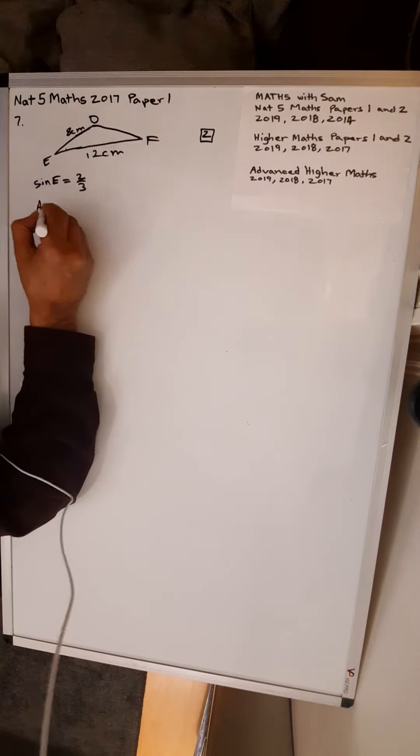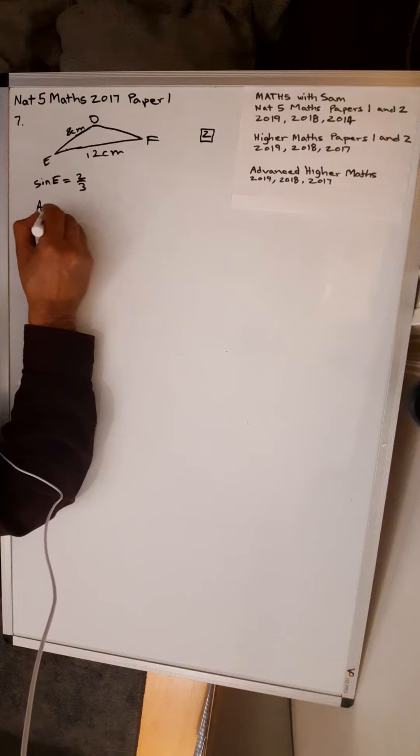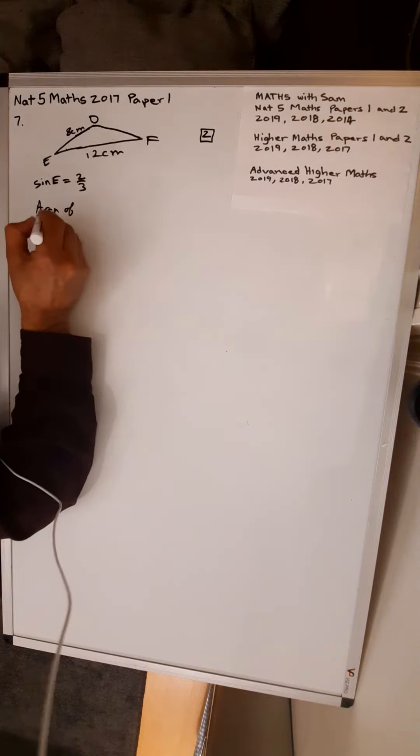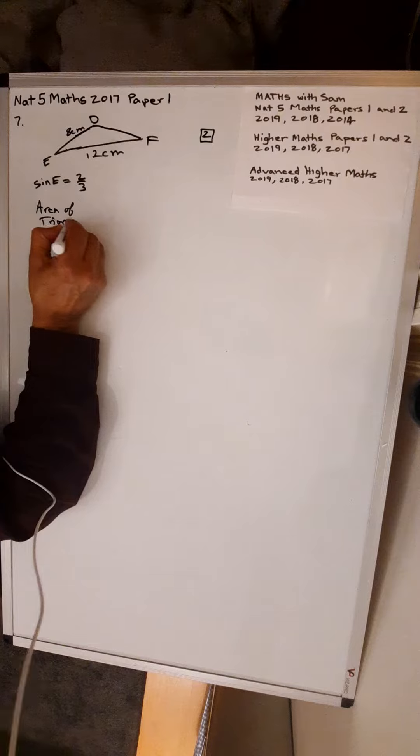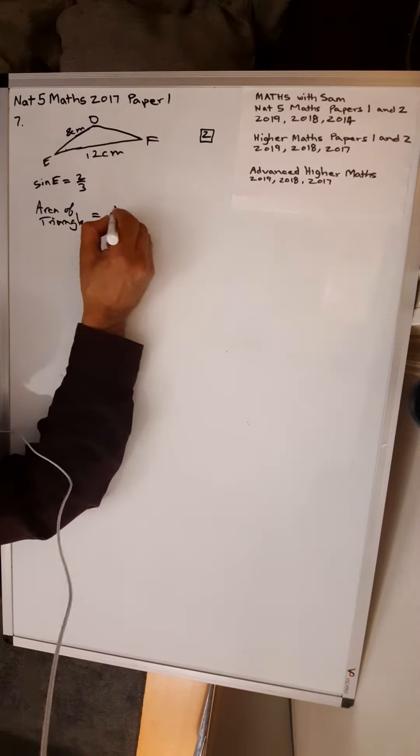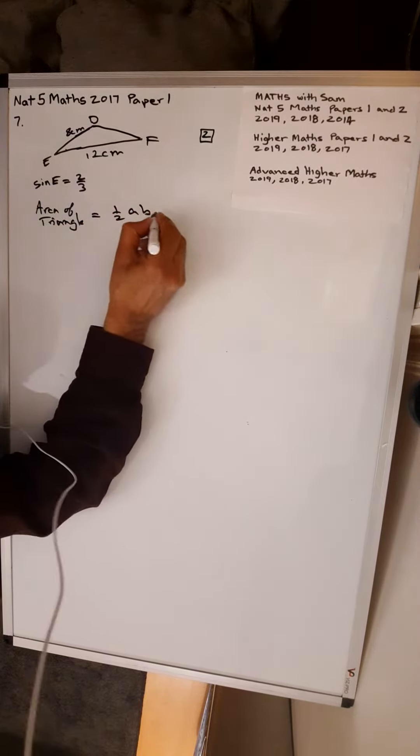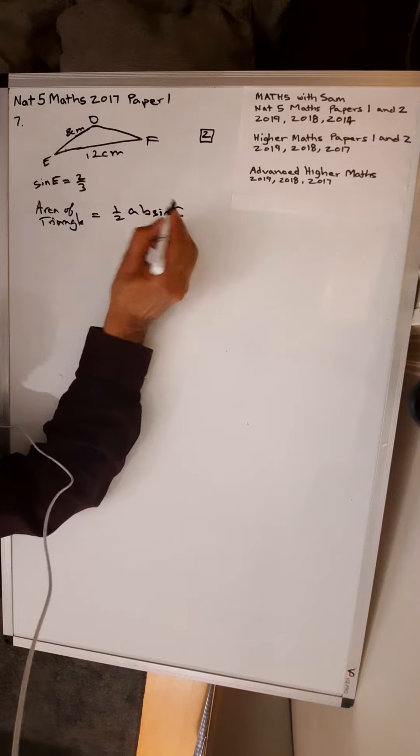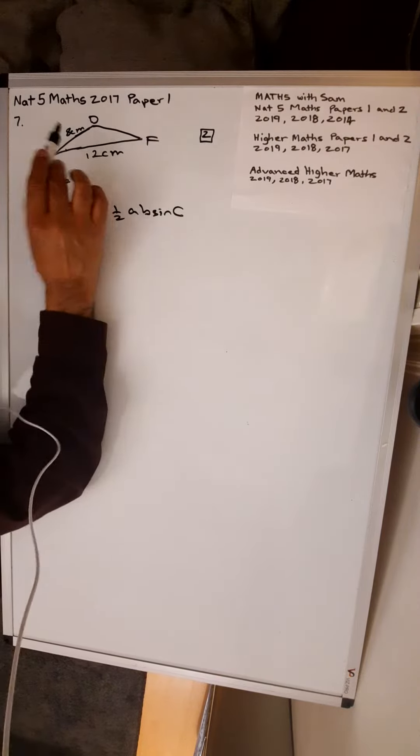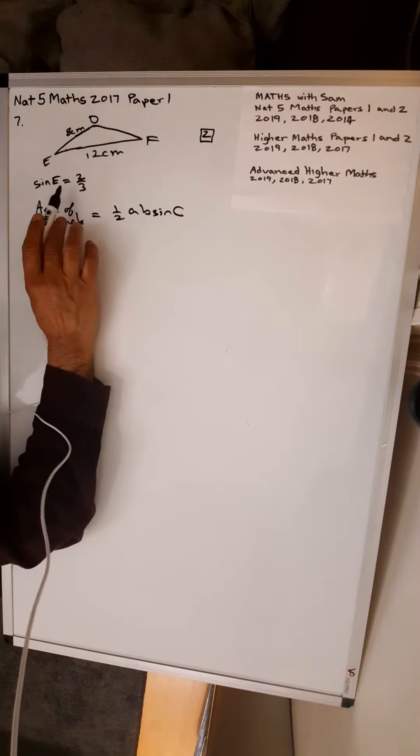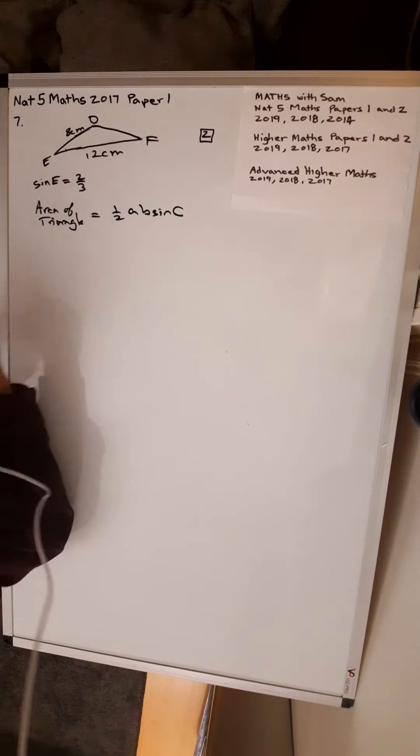So area of triangle is equal to half AB sine C. Your AB is the 8 and the 12, and sine C is 2 over 3.